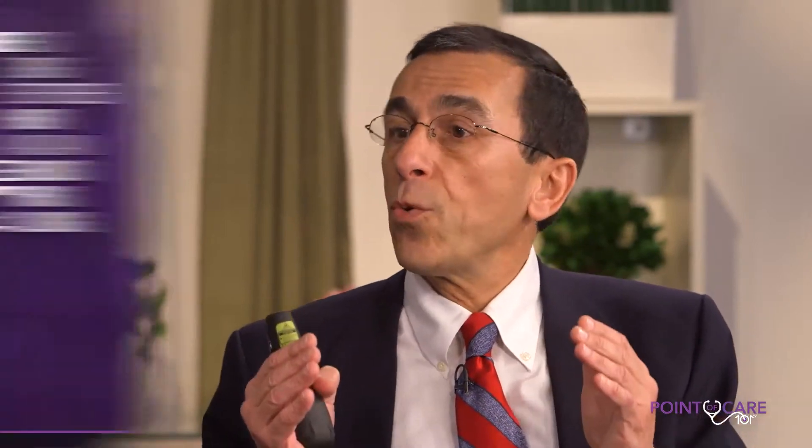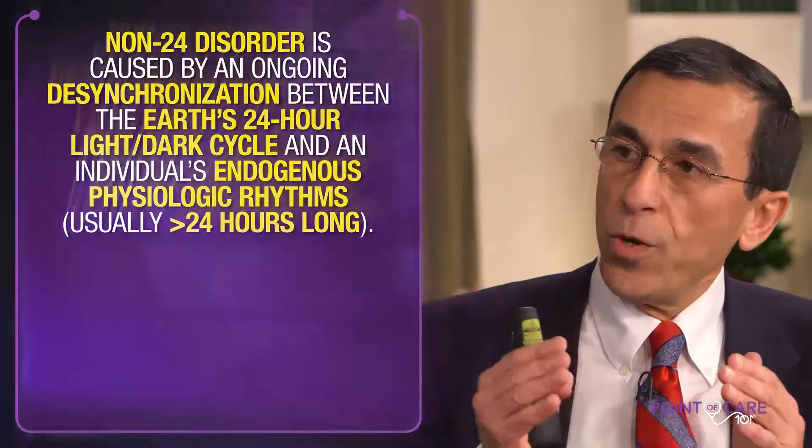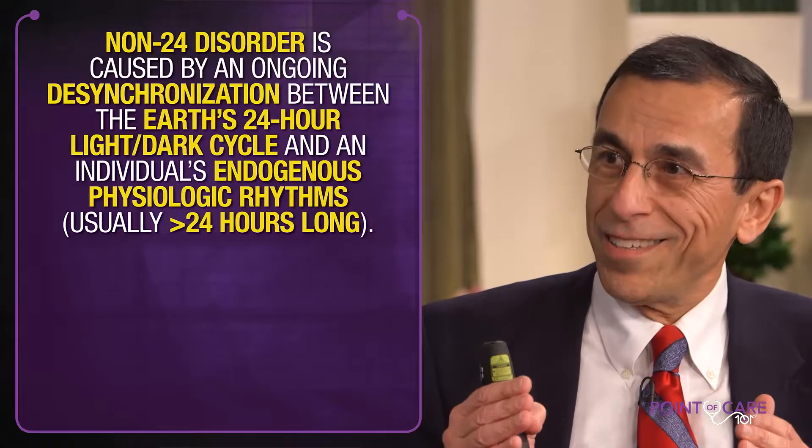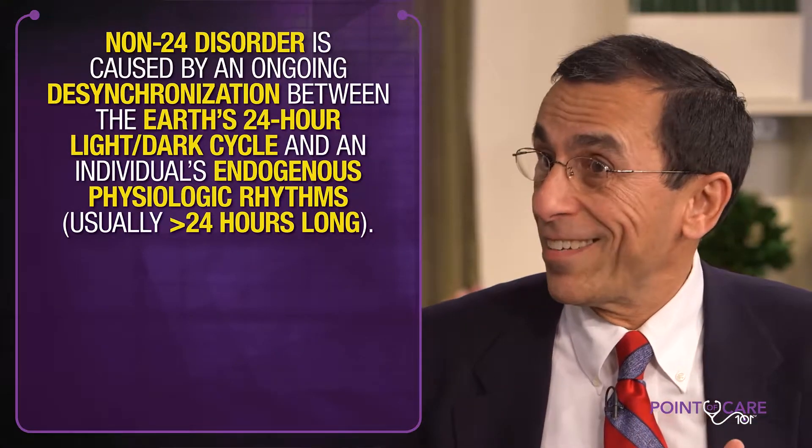In this particular disorder, there is a greater than 24-hour length to the circadian rhythm, so individuals begin to live a 25-hour rhythm. Imagine living on a 24-hour planet but experiencing a 25-hour day — it just doesn't work.